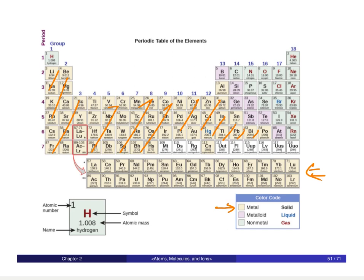In addition, we have the F-block elements down at the bottom of the periodic table, which we won't be spending too much time with in this course, though you may explore them further later. The metallic compounds are essentially in the bottom left of the periodic table. The non-metal compounds are up at the top, and the metalloids are the group of elements going right down the diagonal separating the metals and non-metals.